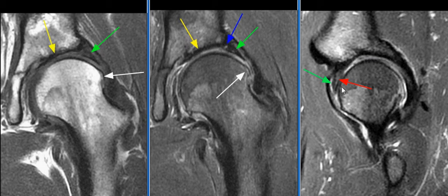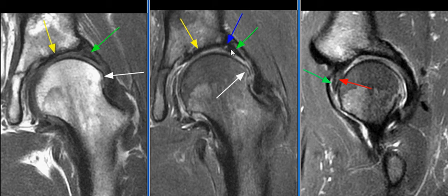There is a longitudinal tear in the anterior acetabular labrum, as seen on this image with the red arrow, along with chondrolabral separation laterally, as seen on this image with the blue arrow.